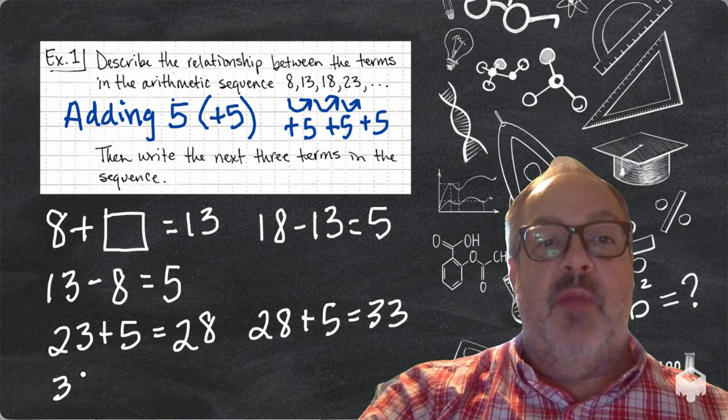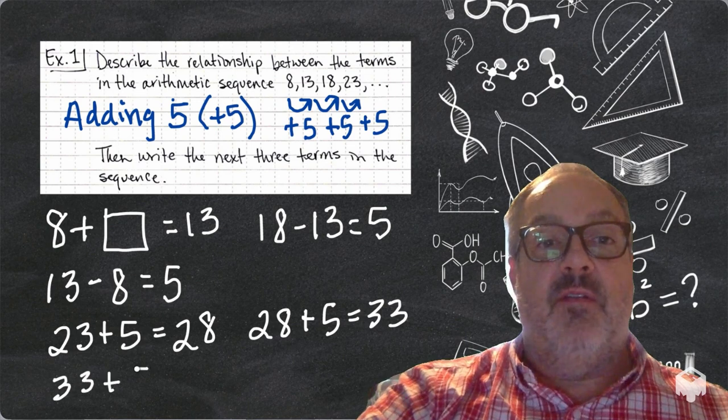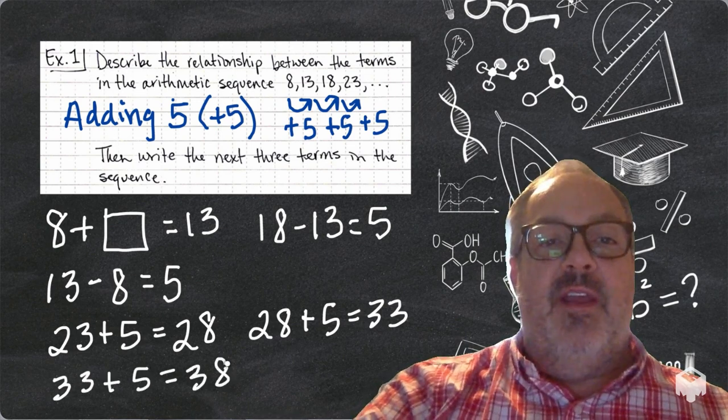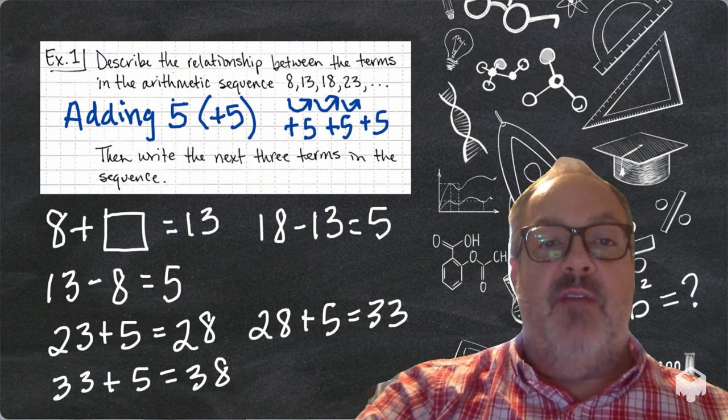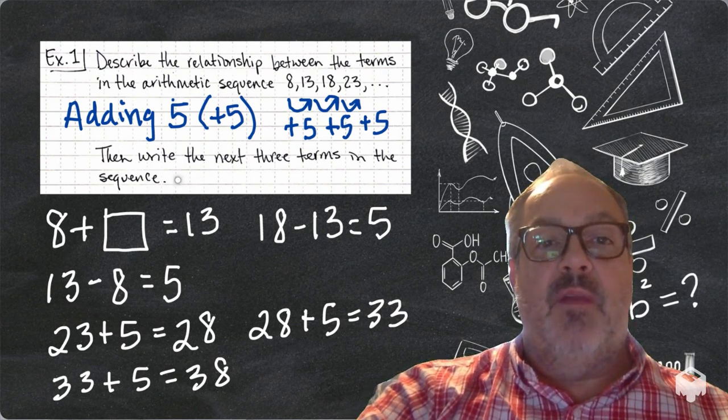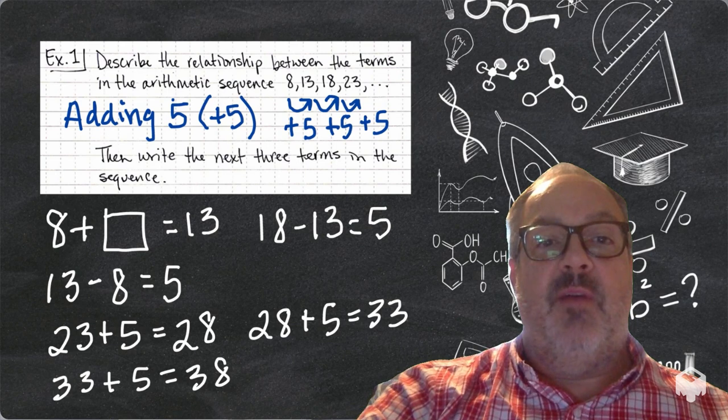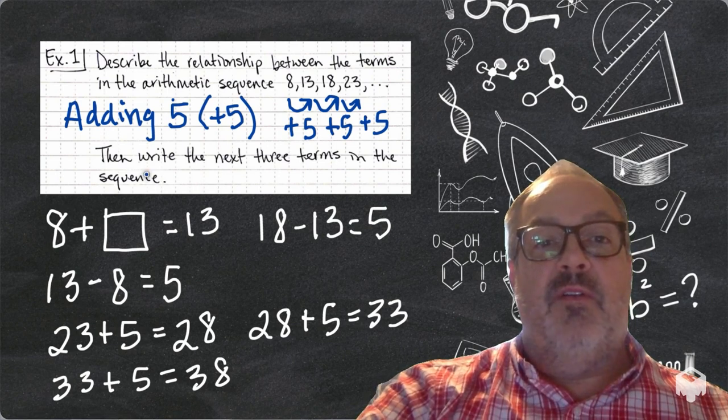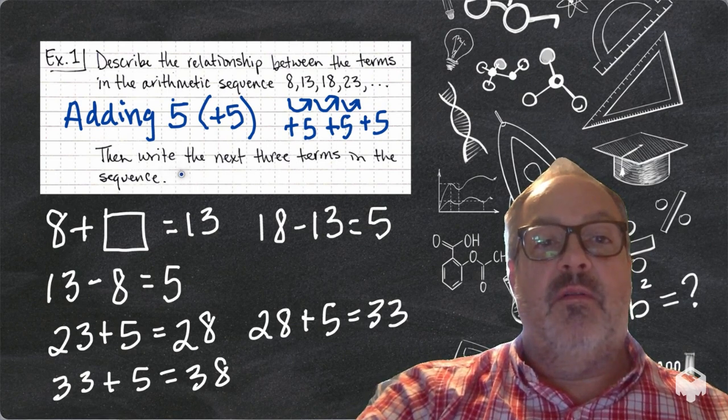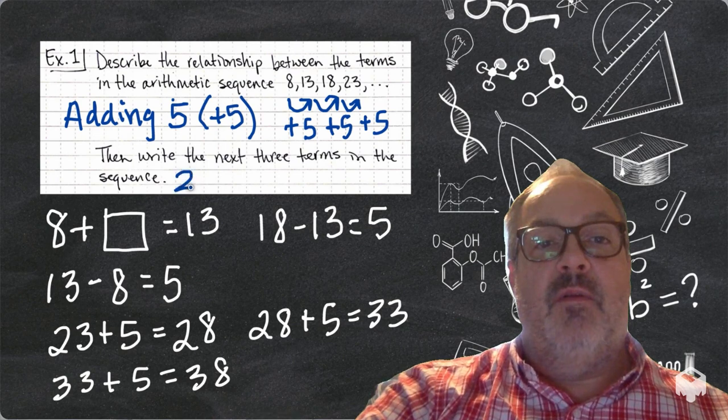And then for my third term in the sequence, or the next third, is going to be 33 plus 5 equals 38. So, the next three terms in the sequence are 28, 33, and 38.